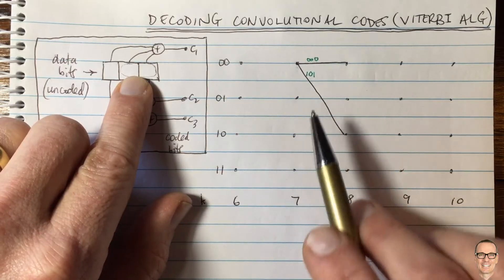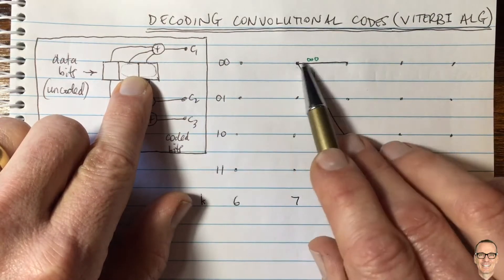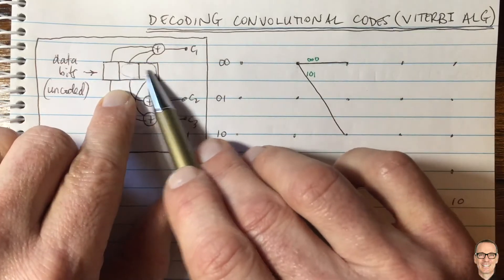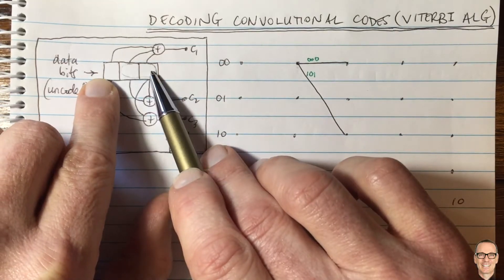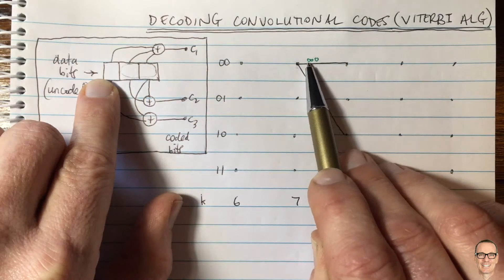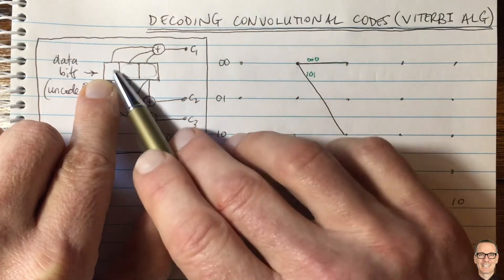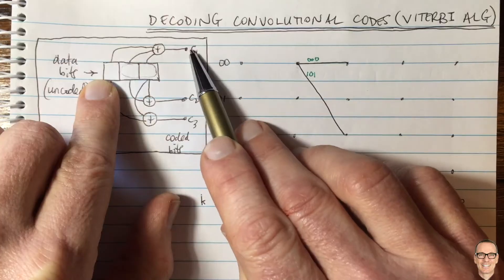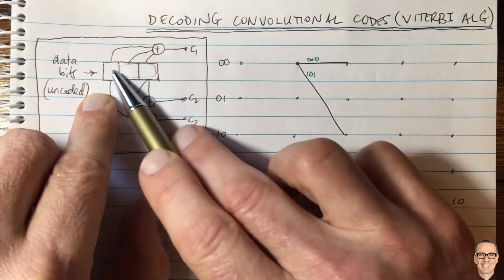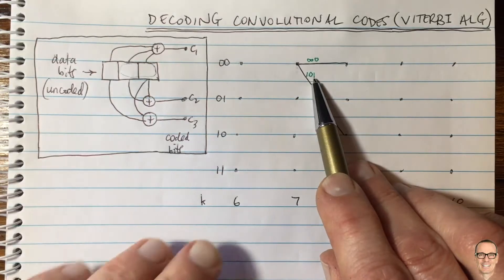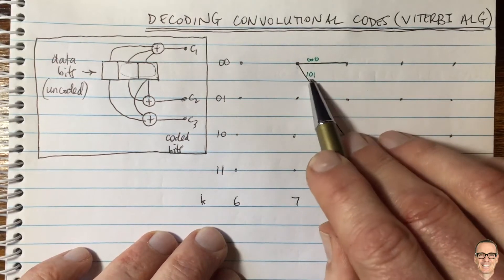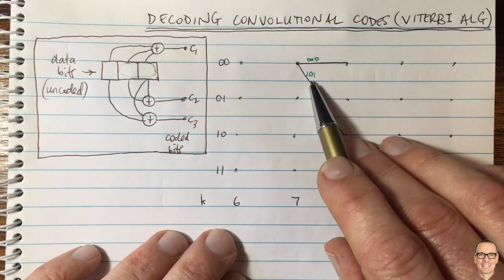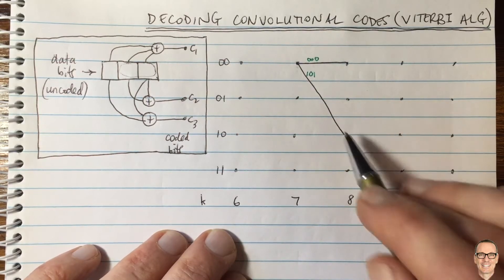In green, I've shown what the output parity bits — the coded bits — would be for each transition. For example, if you're in state 00 and input is 0, you have all zeros in the shift register, so the output coded bits are 000. If the input is 1, the register becomes 100, and the first output is 1, the second is 0, and the third is 1 — giving 101. These are the sequences you'd expect to receive at the receiver if there were no errors.